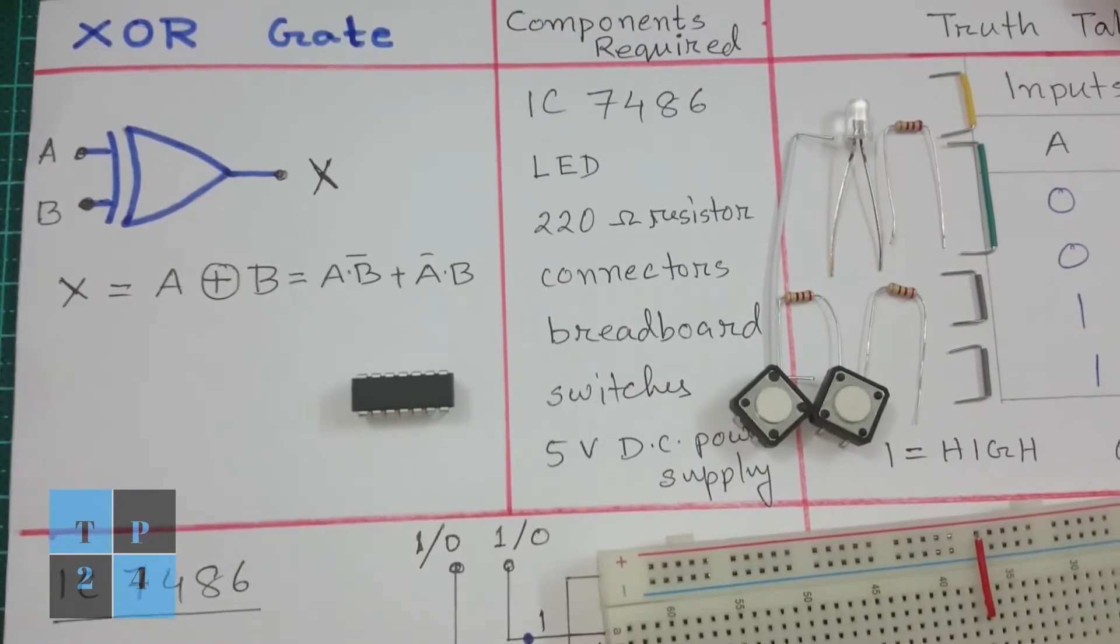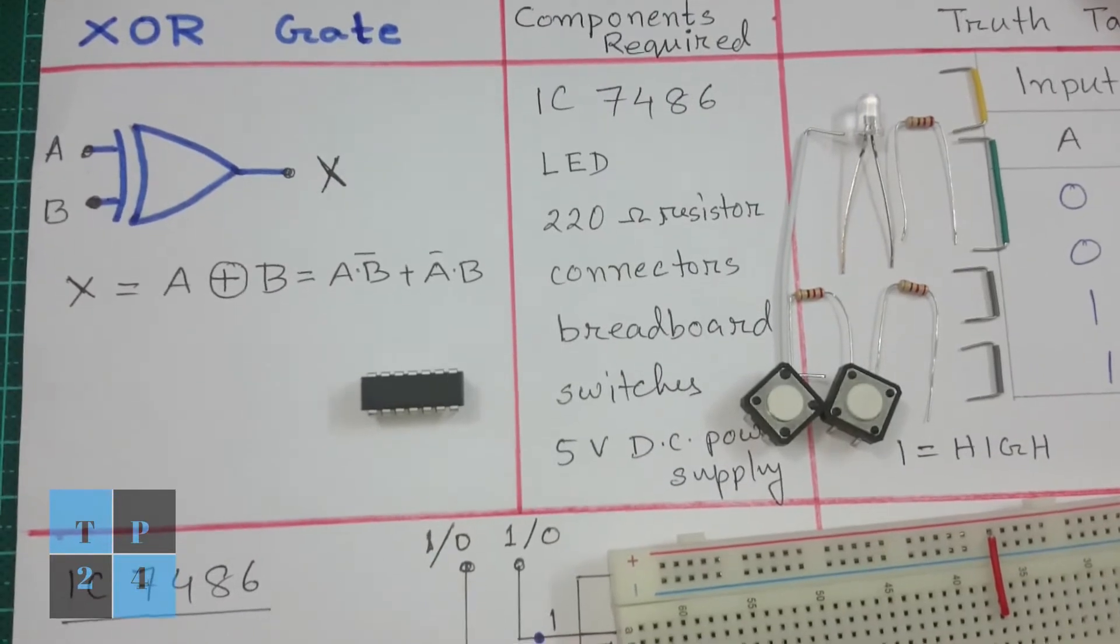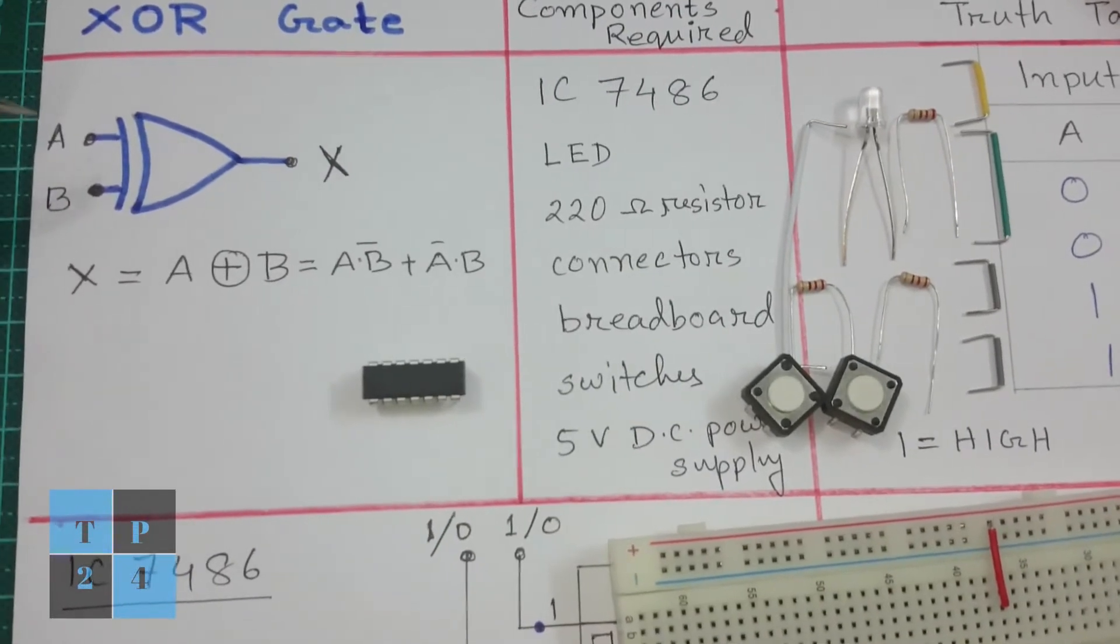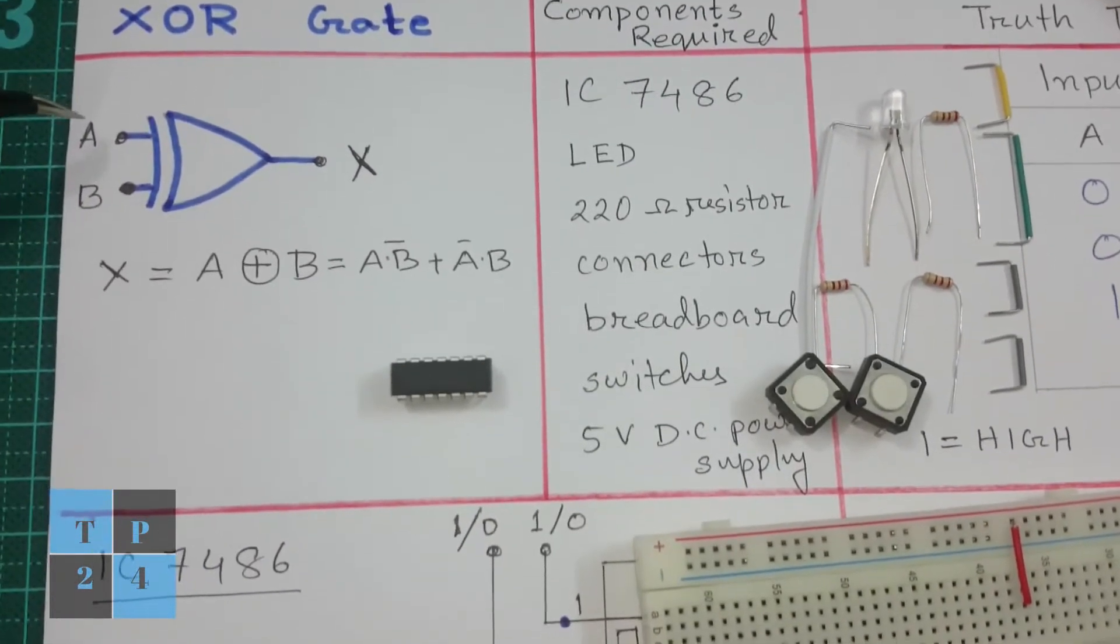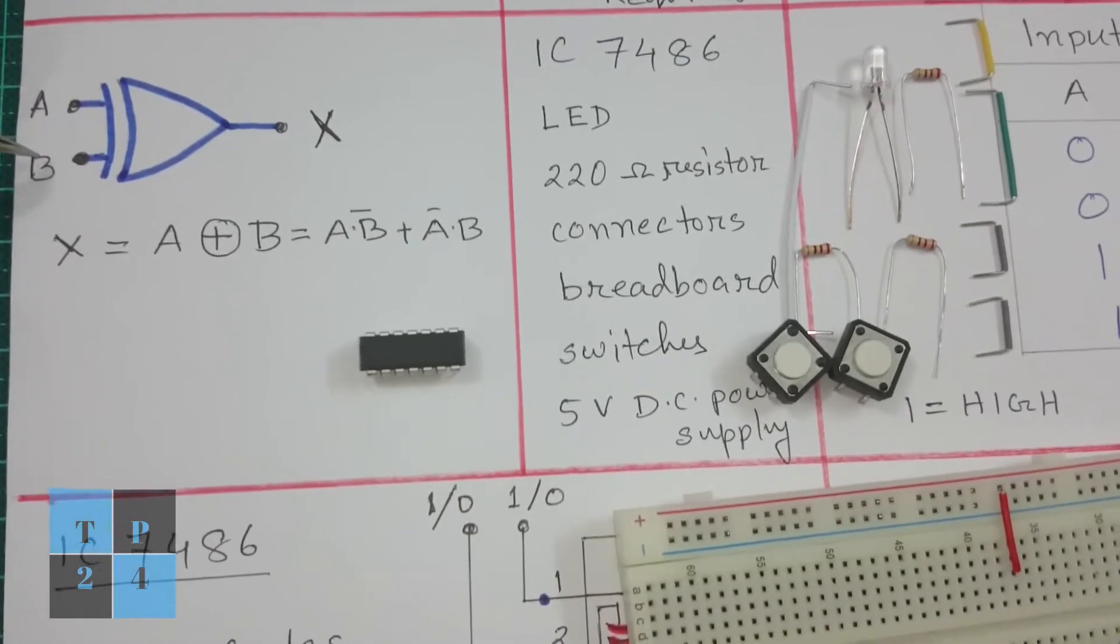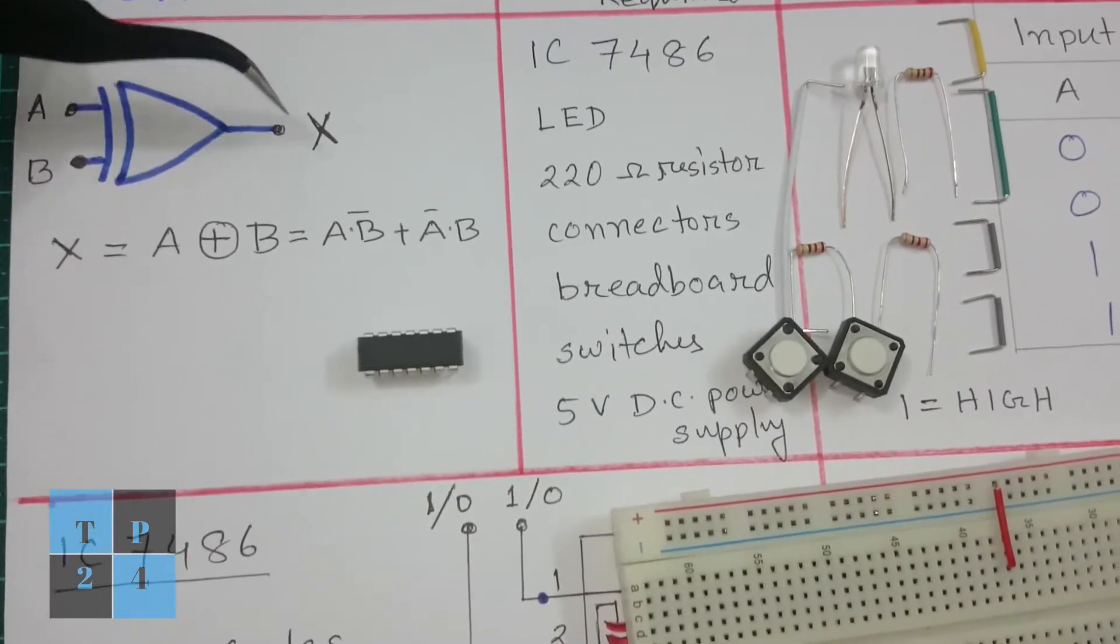Today I am going to show you XOR logic gate. Here is the symbol of XOR logic gate. Here A and B are the inputs and X is the output.